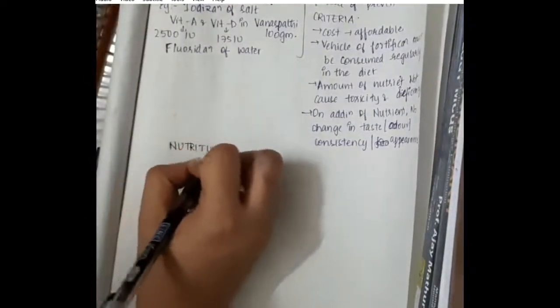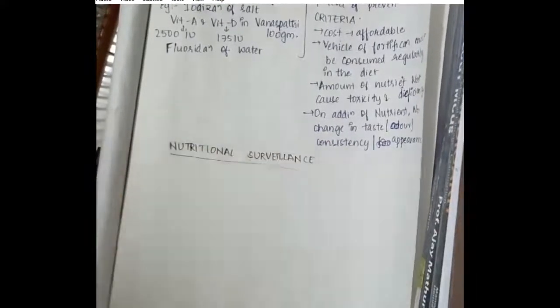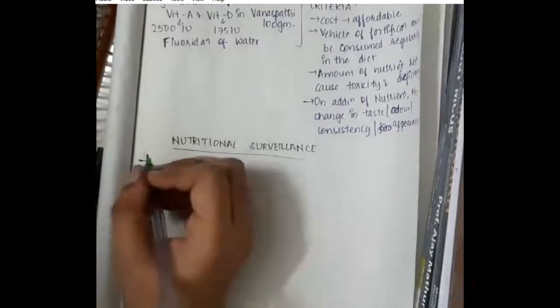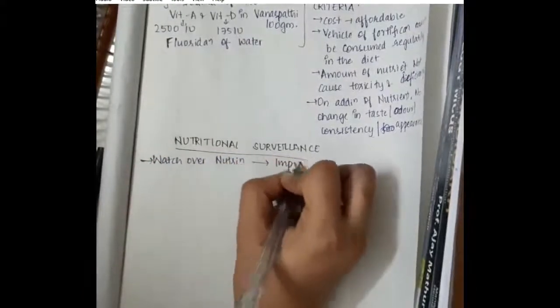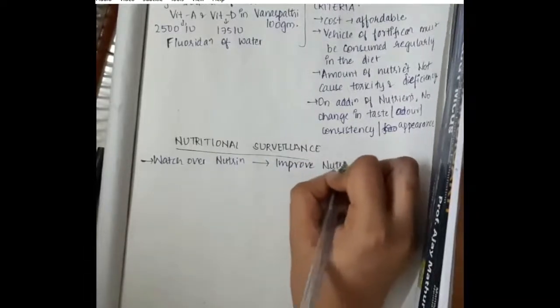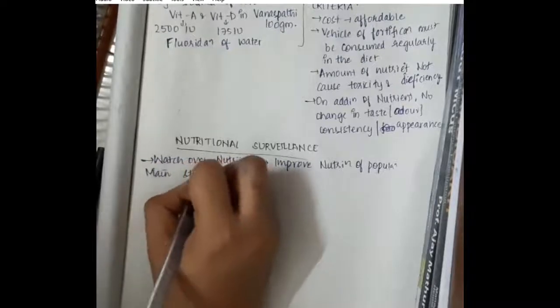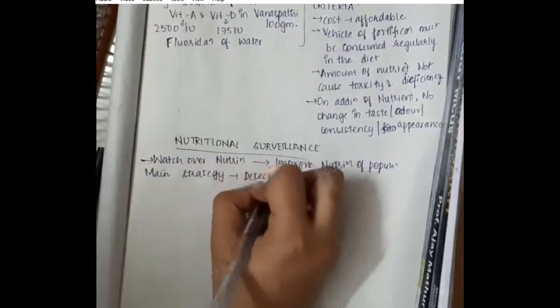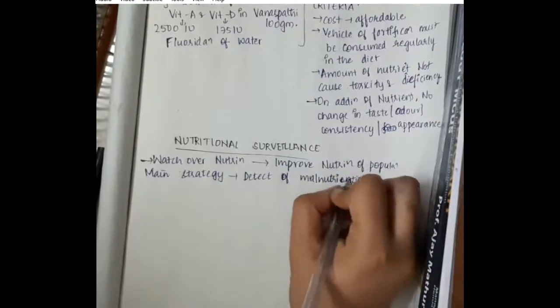Then we have nutritional surveillance. Nutritional surveillance is watching over the nutrition of the people to improve the nutrition of the population. The main strategy is to detect malnutrition - here we have to detect malnutrition.